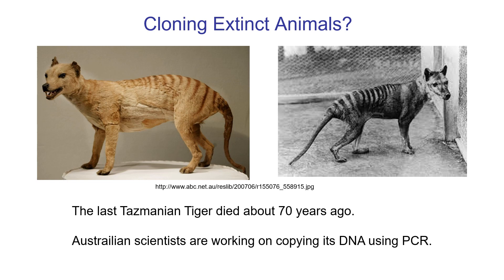Another interesting application of cloning relates to extinct animals. What you're seeing here is a Tasmanian tiger — a stuffed one on the left and the last known photo of the last known Tasmanian tiger on the right. It was a dog- or fox-like critter but was actually a marsupial with a pouch like a kangaroo. We have stuffed animals, tissue samples, and other material from these Tasmanian tigers, and it might be possible to clone them. We'd need to collect all the DNA, get the entire genome, fit the broken pieces back together like a puzzle, put that into the empty egg of a similar organism, and perhaps use a similar organism as a surrogate. It may be possible to bring back recently extinct animals like this one.